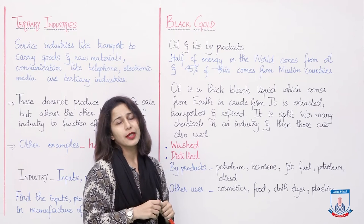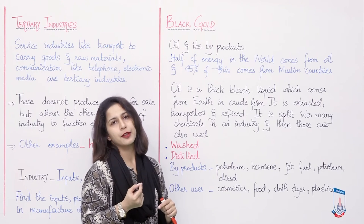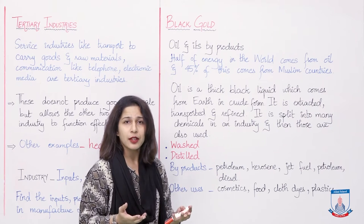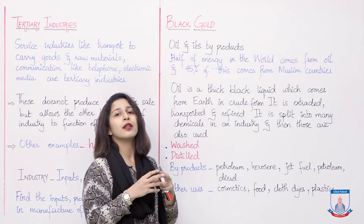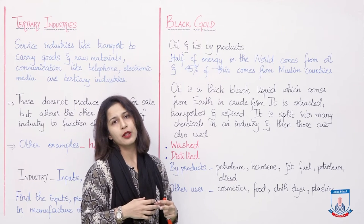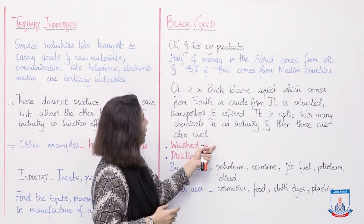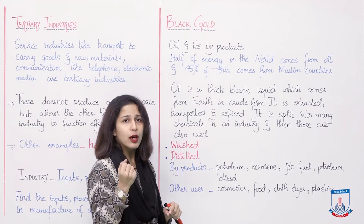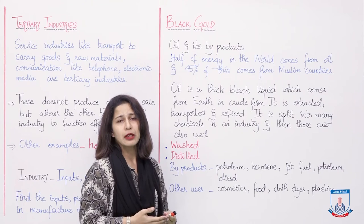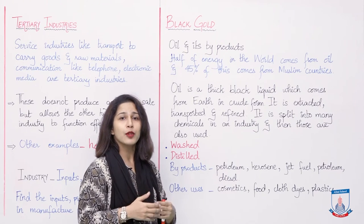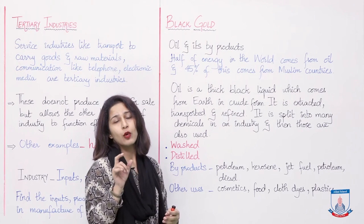Iska kya matlab hua? Iska seedha matlab hua ke geographically humare paas oil ke bahut sare reserves hain. Jab Allah Taala ne humein itne sare khazane diye hue hain, toh insan phir un khazanon ko istamal karta hai aur unse dusri cheezein banata hai apni suhoolat ke liye. So in this whole process, industry comes to our use. Now, why is it called 'black gold'? Gold ki baat to aapko samajh aa gayi hogi — kyunke ye humein itna paisa deta hai. Hum isko khud bhi istamal karte hain energy production ke liye, aur hum isko dusre countries mein bhi export karte hain. The largest oil reserves are found in Saudi Arabia.